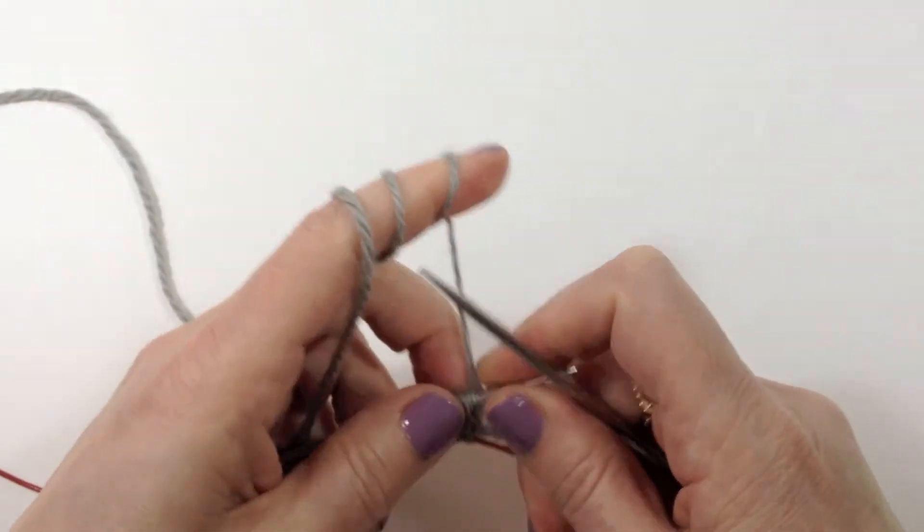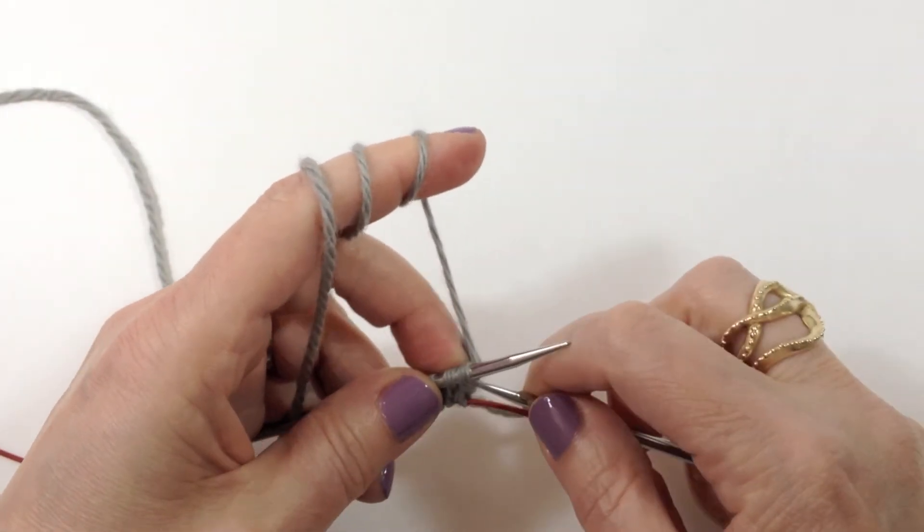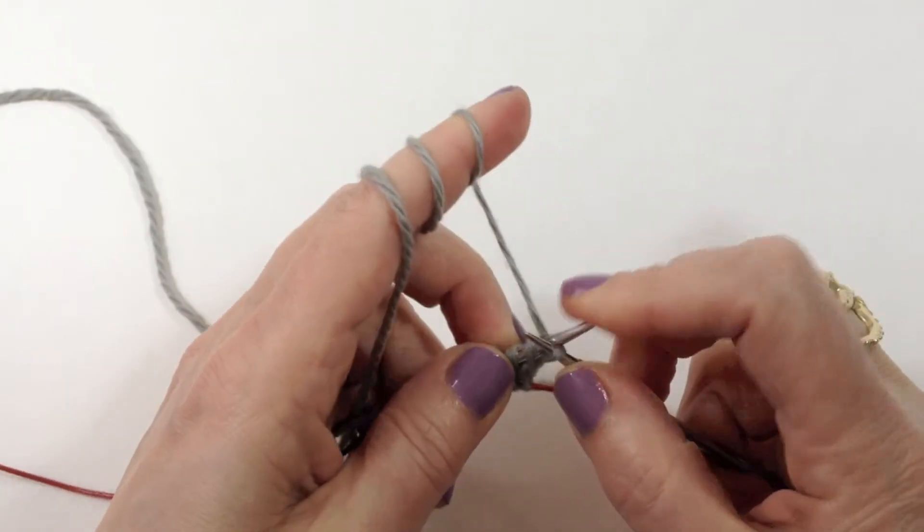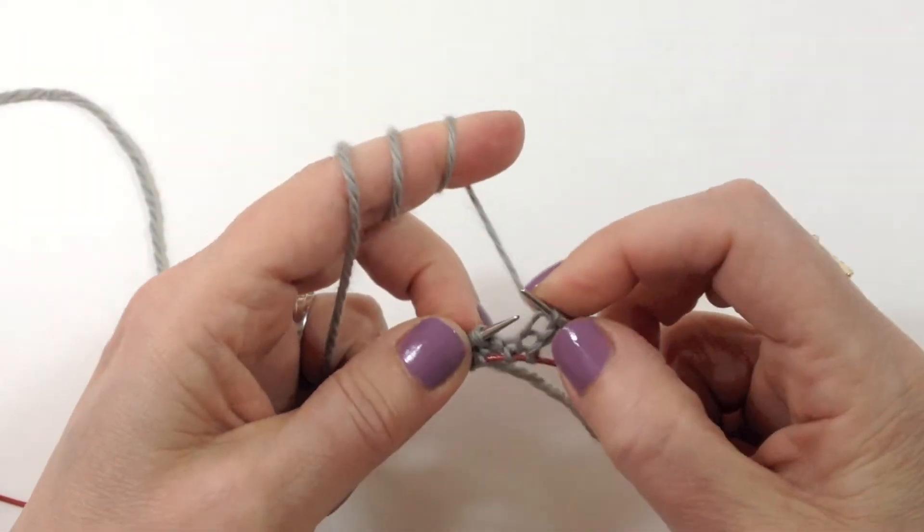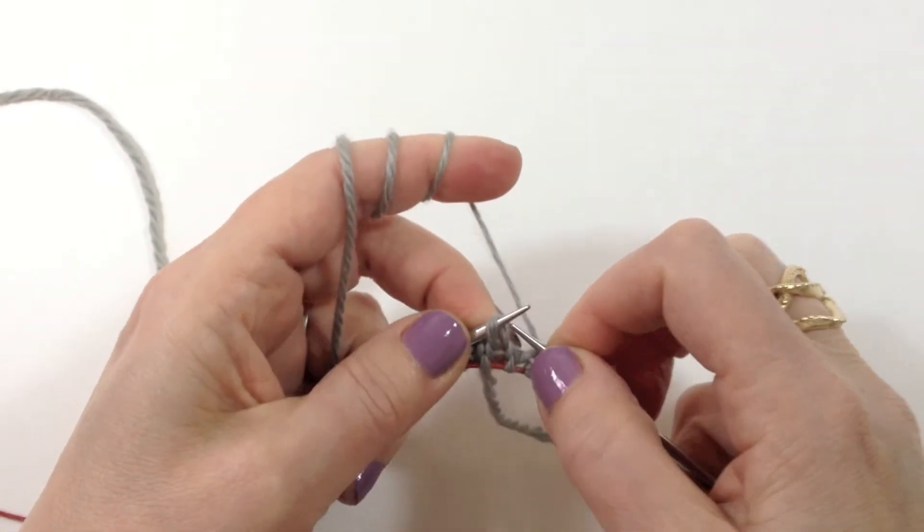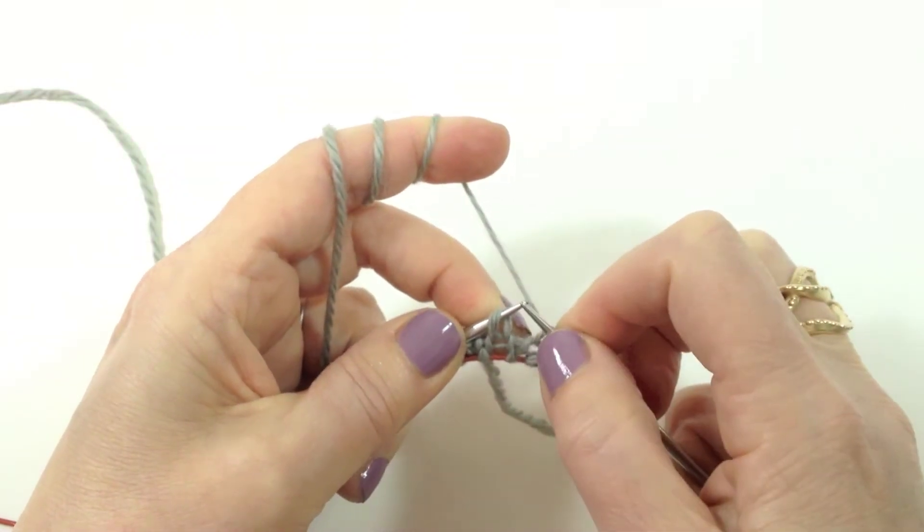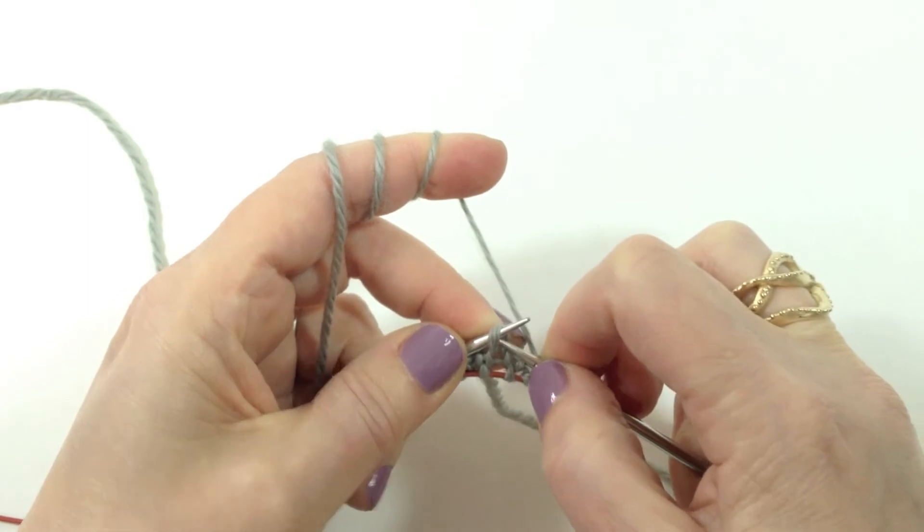Now we're going to knit across the other side and I like to knit through the back loop on that first row on the second needle because those stitches are turned around. You can see how that strand that's near the tip of the needle is behind the needle so we knit through the back loop.